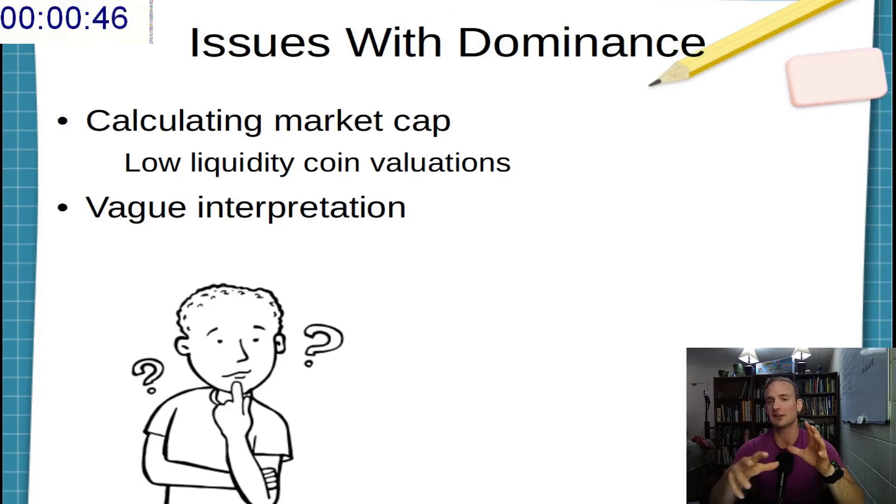Now, although dominance is relatively easy to understand, there are some issues with it. So, for example, coins with a low liquidity but a high price can throw off the market cap valuations a little bit depending on how they are valued. Secondly, there's a bit of a vague interpretation. We know that dominance tells us the relative ratio of Bitcoin's market cap to the cryptocurrency market in general, but what does that actually mean? Yeah, it might tell us that people prefer safety and security of Bitcoin to profit and risk of altcoins, but it doesn't really tell us where the price is going or things like that.